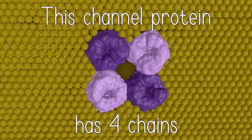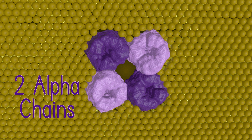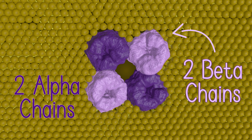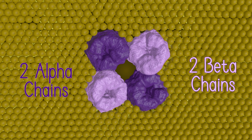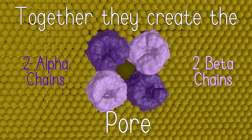This channel protein has four chains: two alpha chains and two beta chains. Together, they create the pore.